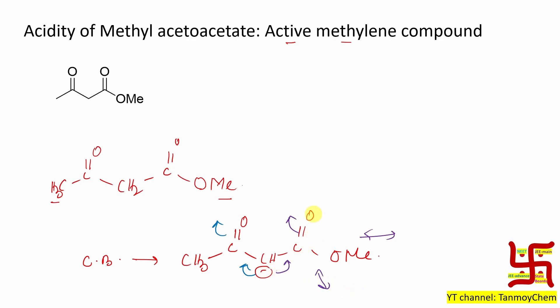Two canonical forms means two delocalizations — more delocalization. Higher the delocalization, higher the stabilization. So this carbanion will be produced easily by removal of a proton. This is the story of the acidity of methyl acetoacetate. I can say this proton is the most acidic.